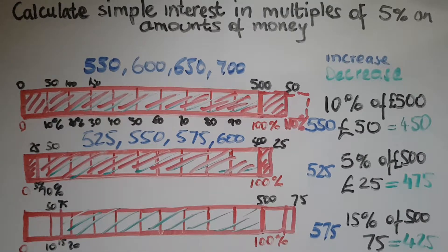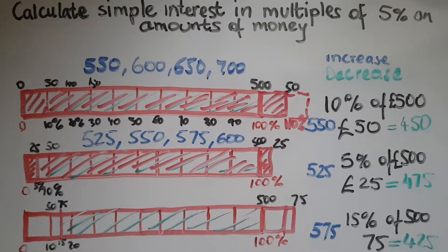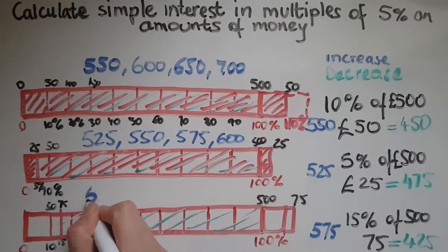If the interest rate is 15%, you'd be getting 15% on top of the £500 at the end of year one. So 15% of £500 is £75, which means at the end of year one you'd have £575.